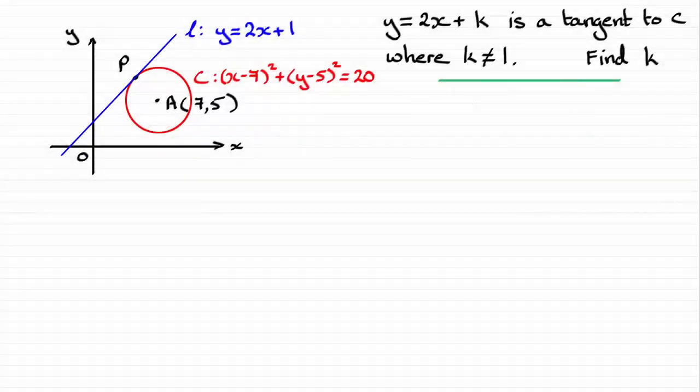Hi, now what I've got here is an alternative way of finding out this value of k when we've got this equation of a tangent y equals 2x plus k, being a tangent to the circle C.